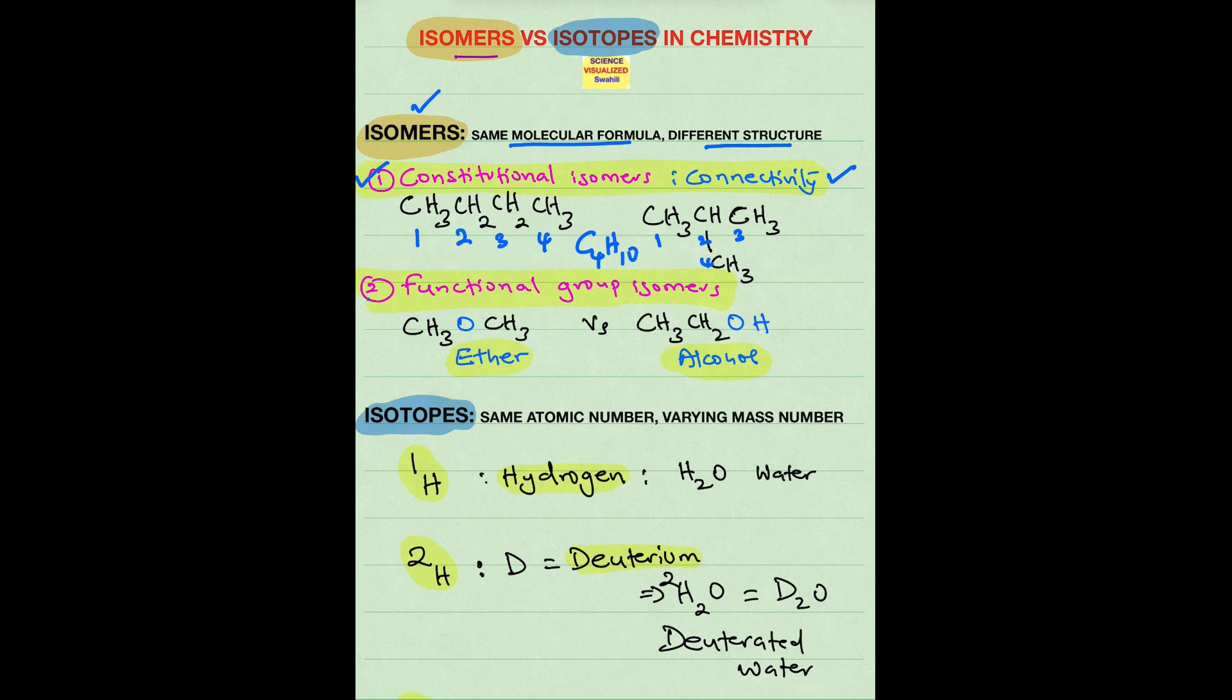The next type of isomer is called functional group isomers, where they have the same molecular formula but different functional groups. So for example, if you look at these two structures, the first one is an ether, the second one is an alcohol, and the molecular formula is C2H6O.